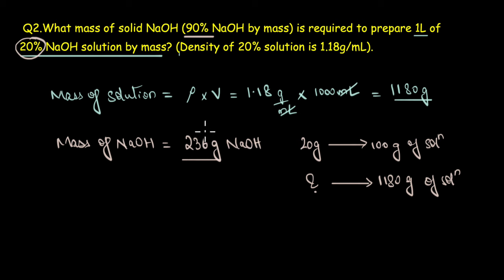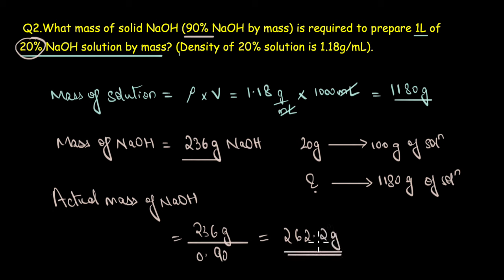That means the actual mass of NaOH required would be greater than whatever is obtained here, right? Because it's only 90% pure. So actual mass of NaOH would be 236 grams divided by, taking into account the 90% purity, 0.90, that is 262.2 grams. So this is the actual mass of NaOH required to prepare 1 liter of 20% NaOH solution by mass.